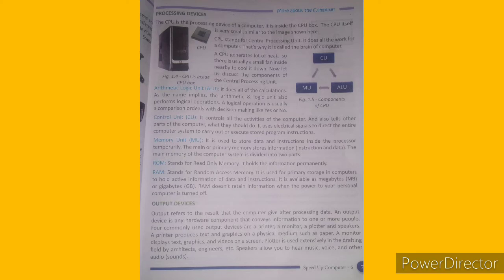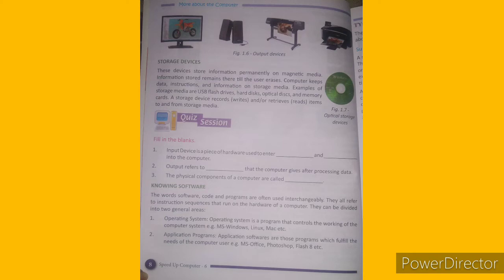Output device refers to any component that conveys information to the user as a result of the computer's processing. Commonly used output devices are printer, monitor, plotter, and speaker. A printer produces text and graphics on a physical medium such as paper. A monitor displays text, graphics, and videos on the screen. A plotter is used extensively in drafting fields like architecture and engineering. Speakers allow you to hear music and other audio.